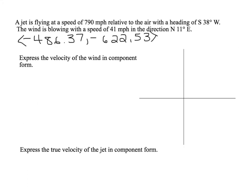We now need to express the velocity of the wind in component form, so we need our theta to represent the bearing north 11 degrees east. North would be straight up and then 11 degrees east of there, so this is 90 degrees minus 11 degrees, which leaves me with 79 degrees.